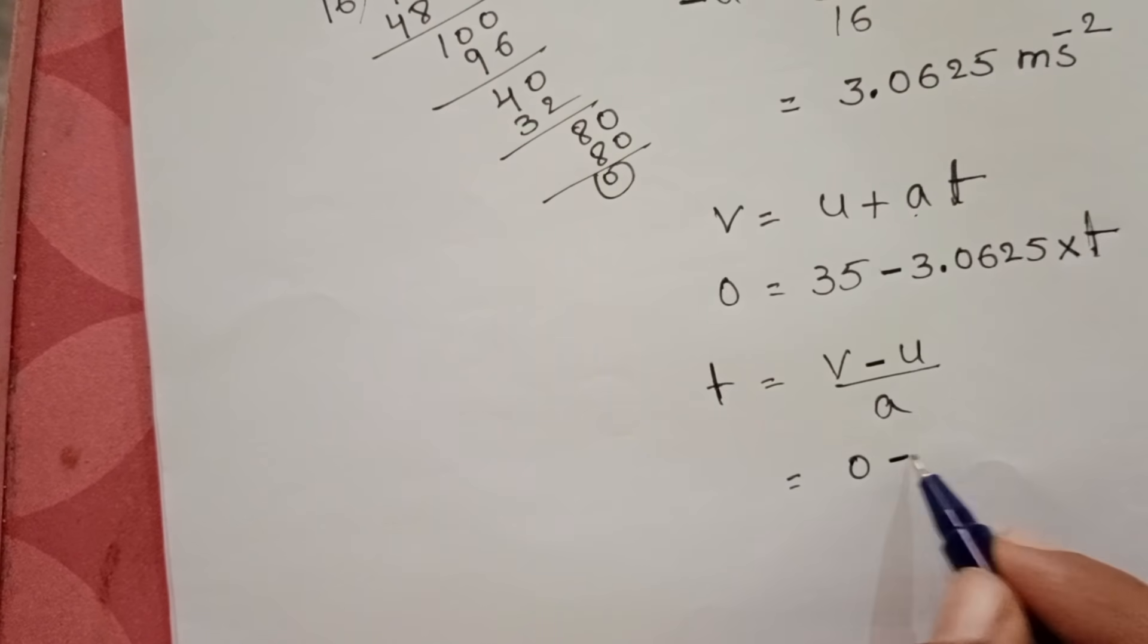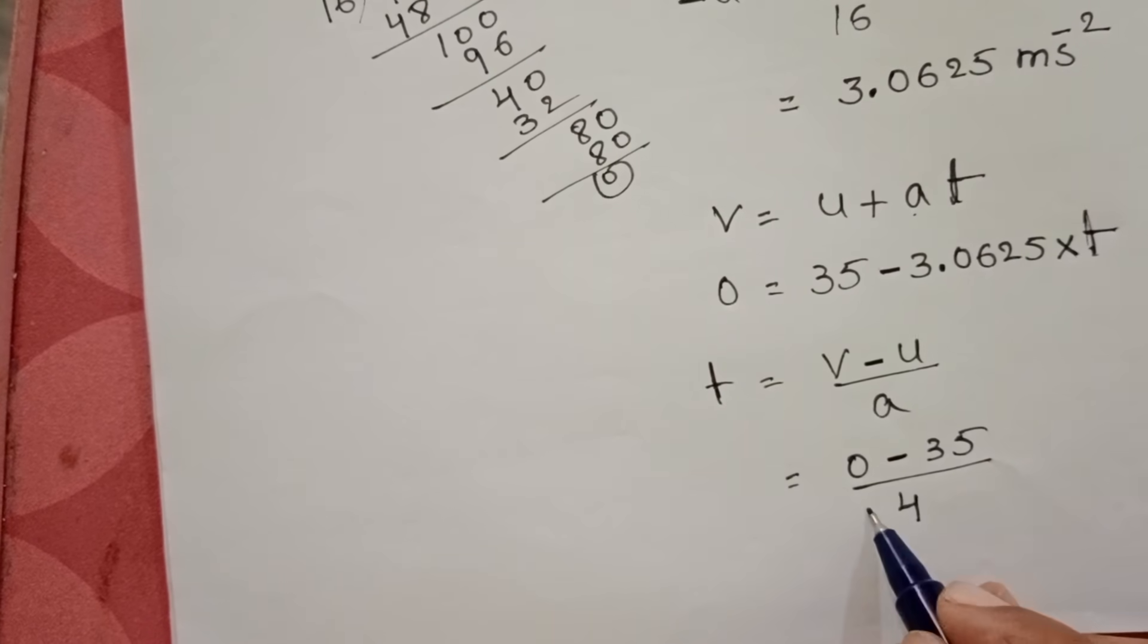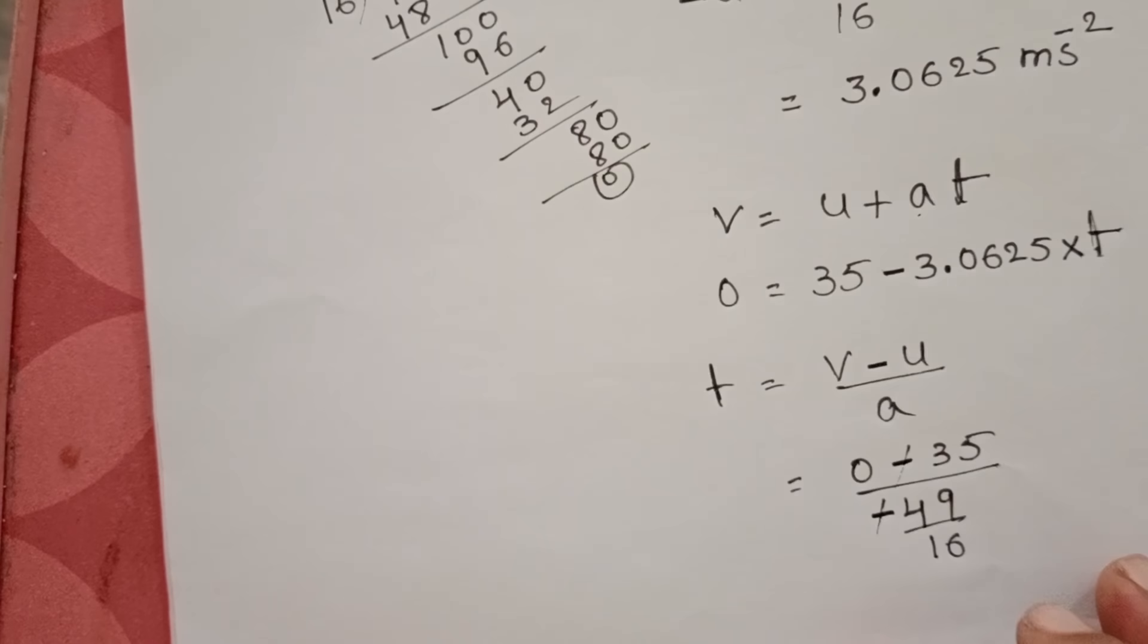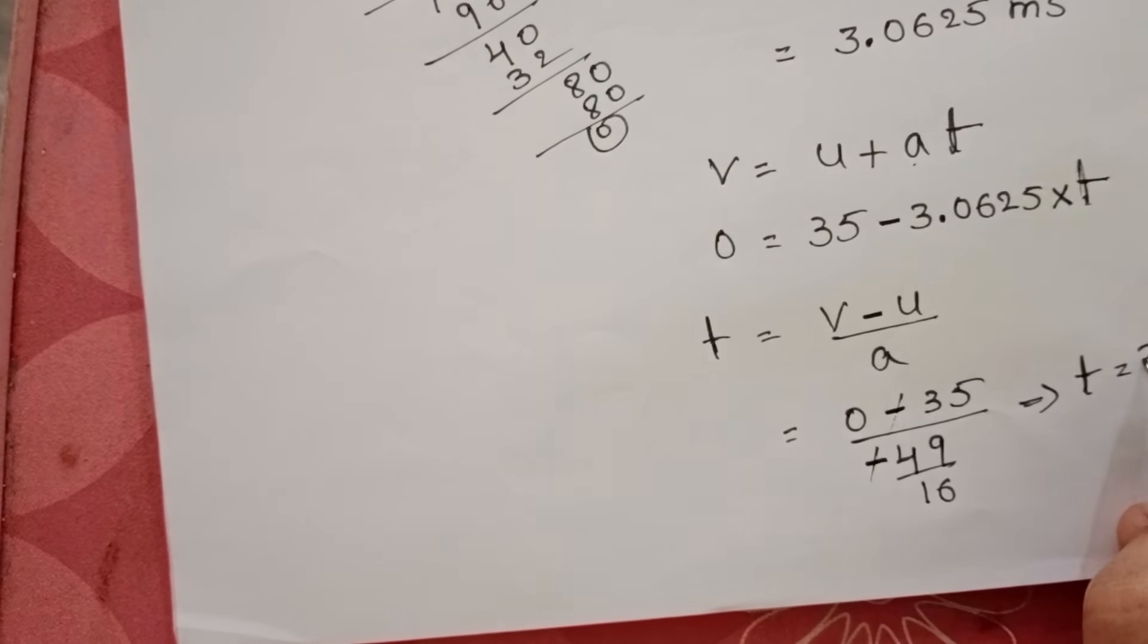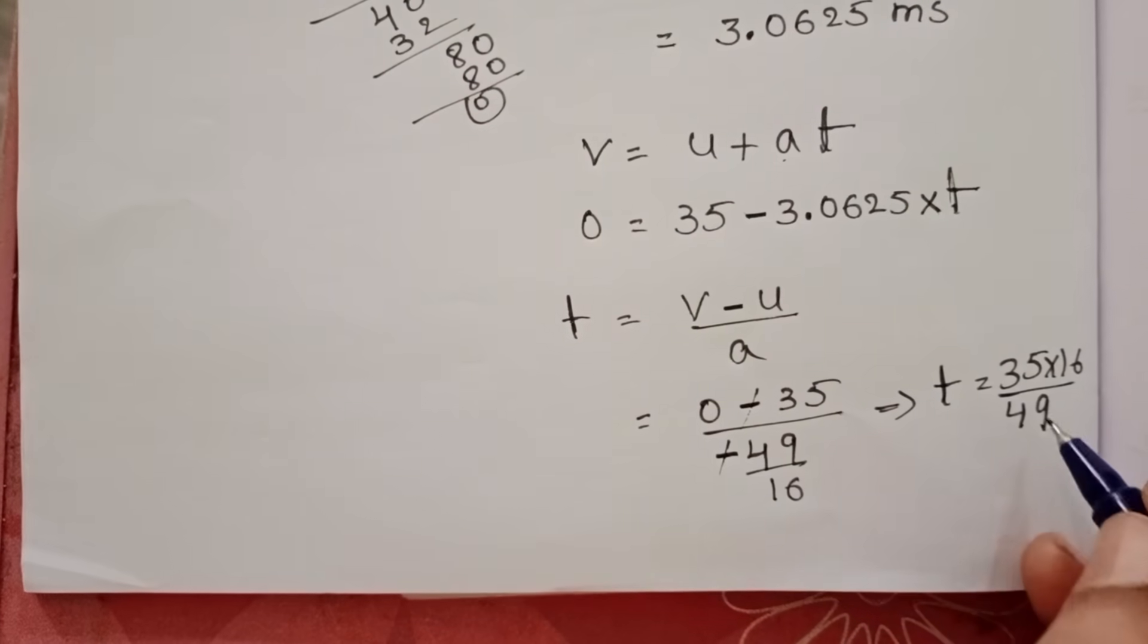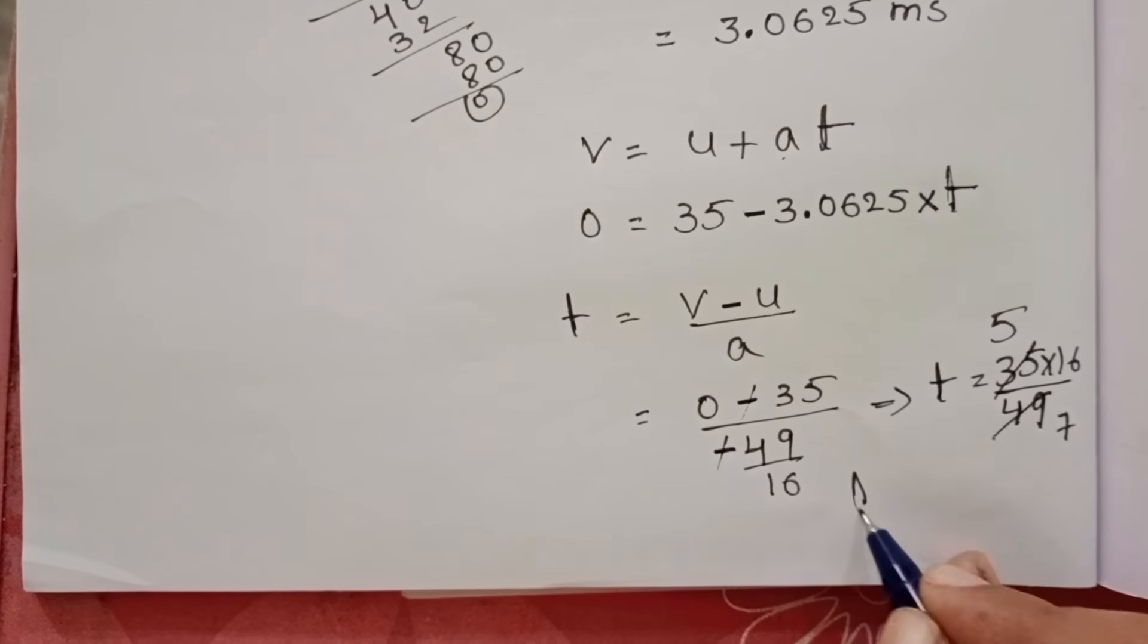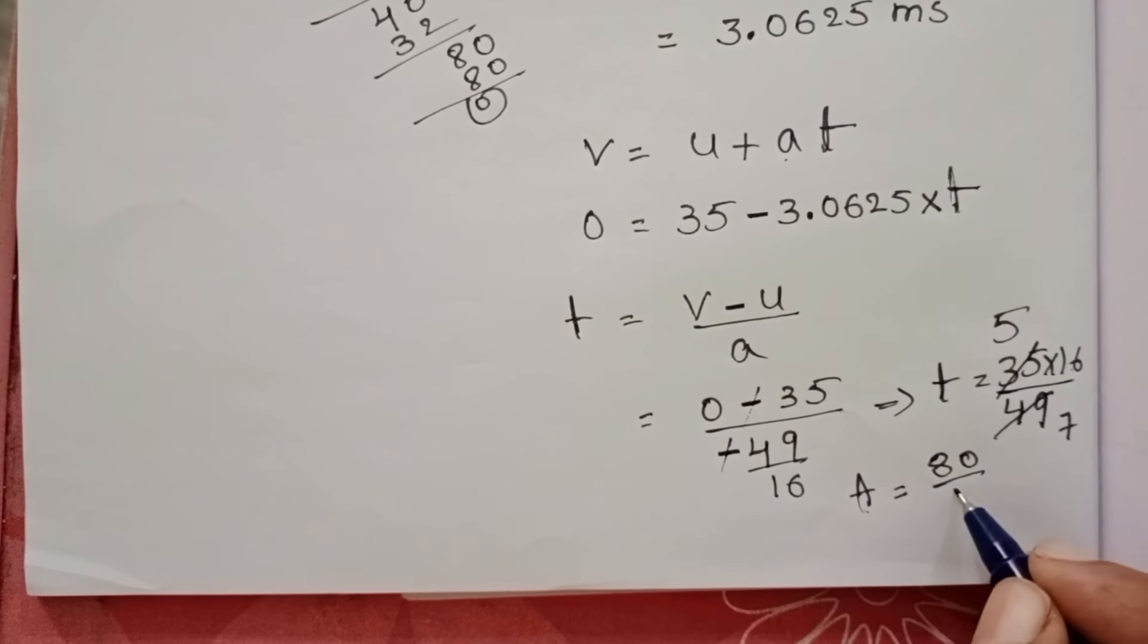0 minus 35 by A in fraction form, minus 49 by 16. Here, minus minus get cancelled. Time equals 35 times 16 by 49. Cancel with 7: 7 sevens, 7 fives. T equals 16 fives, 80, 80 by 7.